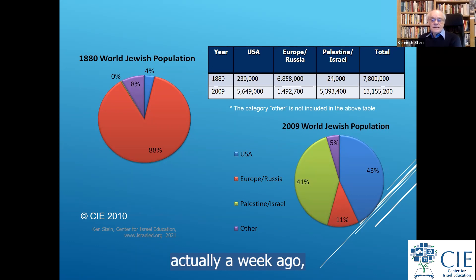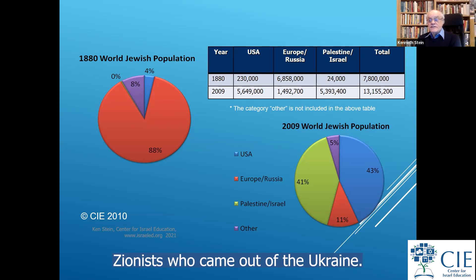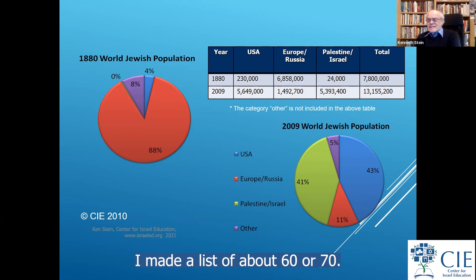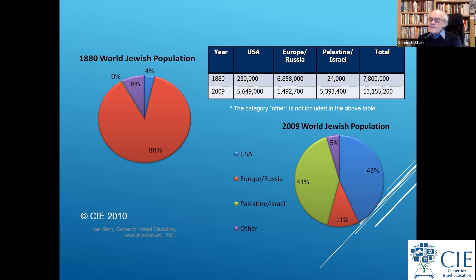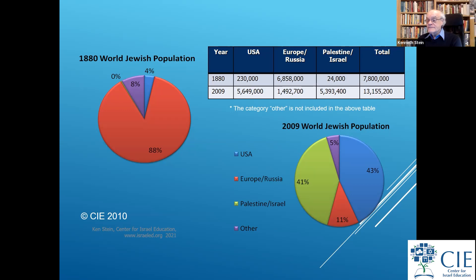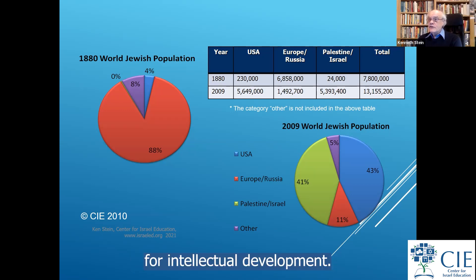A week ago I sat and tried to chart who were the famous Zionists who came out of Ukraine — prime ministers, presidents, Chaim Nachman Bialik, Yitzhak Ben-Zvi, Golda Meir, Vladimir Jabotinsky. I made a list of about 60 or 70. Because the rulers of Ukraine in the 1800s allowed Jews to have access to education and allowed free thought, making it a very fertile environment for intellectual development.